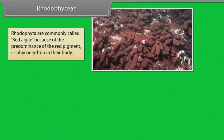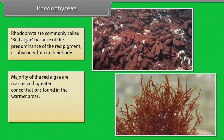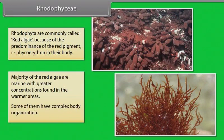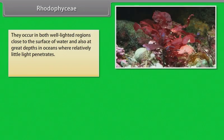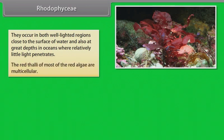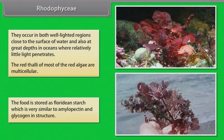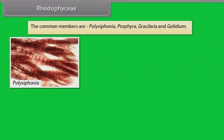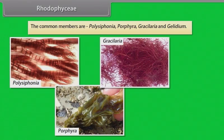Rhodophyceae are commonly called red algae because of the predominance of red pigment r-phycoerythrin in their body. Majority of red algae are marine with greater concentrations found in the warmer areas. Some of them have complex body organization. They occur in both well lighted regions close to the surface of water and also at great depths in oceans where relatively little light penetrates. The red thalli of most of the red algae are multicellular. The food is stored as floridean starch which is very similar to amylopectin and glycogen in structure. The common members are polysiphonia, porphyra, gracilaria and gelidium.